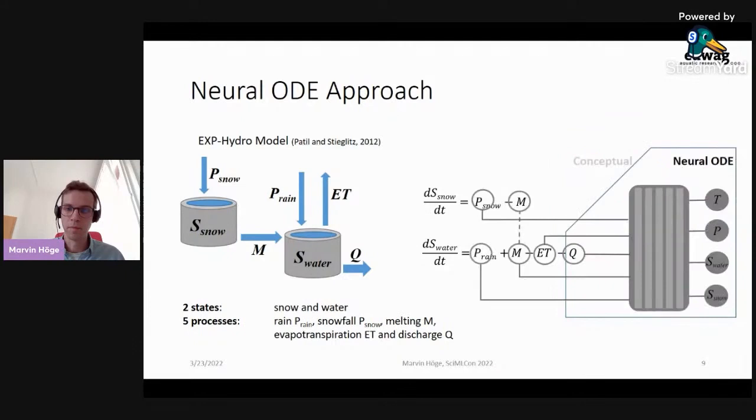In our approach, we replaced the terms of the right-hand side of the ODEs by feed-forward neural networks, or one in that case. Each of the five output nodes is assigned one specific process. The neural network has four inputs, which are the two external forcings, temperature and precipitation, and the internal model states of water and snow. This way, it is possible that the network also learns interrelations of the variables and their mutual impact on the processes.